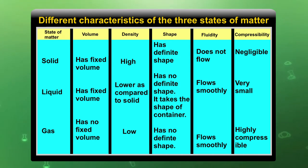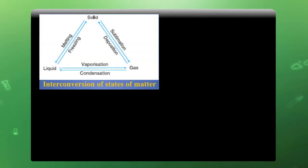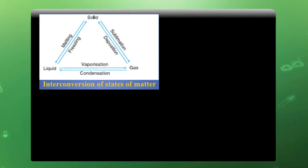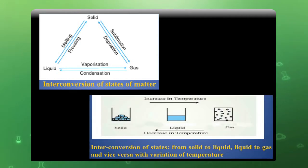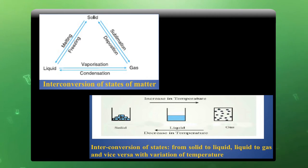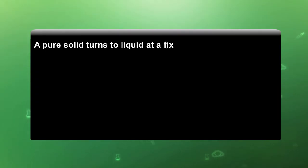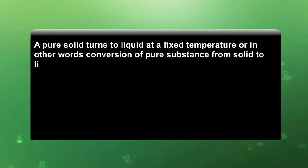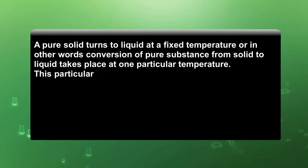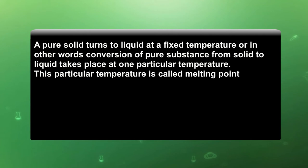This diagram shows how the three states of matter convert into each other. When a liquid is heated it converts to gas; when gas is condensed it converts back to liquid. As temperature increases, the state of matter changes from solid to liquid and liquid to gas. As temperature increases, intermolecular attraction decreases, making molecules freer. At very high temperatures, molecules become totally free and convert to the gaseous state. A pure solid turns to liquid at a fixed temperature called the melting point.